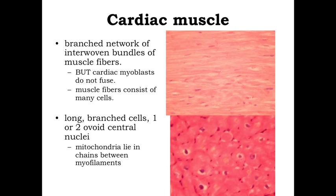So we have striated muscle with cardiac muscle and an interwoven network of muscle fibers. In contrast to skeletal muscle, where cells fuse together forming a single very long cell, in cardiac muscle these fibers are composed of individual cardiac myoblasts — cardiac muscle cells that connect up with one another but don't fuse together. So they're individual cells, sometimes branching cells, but connected, meaning many cells can exist within a single muscle fiber.